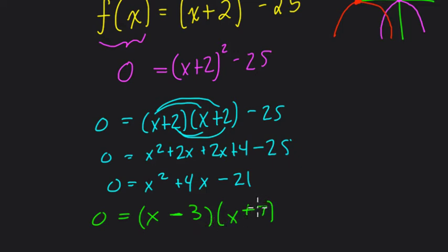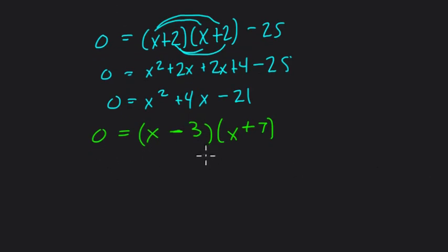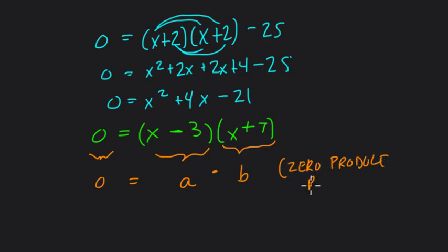Because 7, positive 7, plus negative 3 is positive 4. If I could do it the other way around, you would get negative 4. So now it's saying, what x values would give us zero? Well, think about this. We have one number times another, and the product is zero. So if we think about, let's call this A and B, our product is zero. This is where the zero product property really is useful. The zero product property.